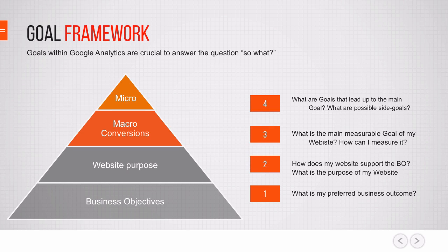This is a simplified view — there are other models and frameworks out there — but for the sake of simplicity I want to explain this four-step process. First of all, the foundation of everything should be the business objectives: what is the preferred business outcome, why is the business actually existing, why are people paying money for the products, and how is this company actually making money?